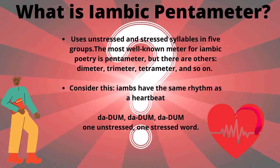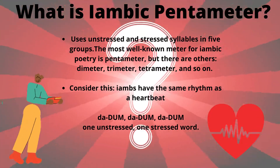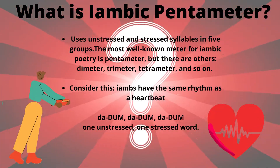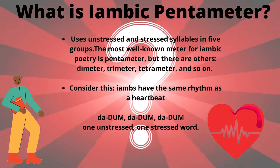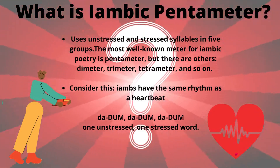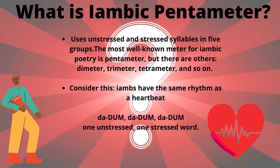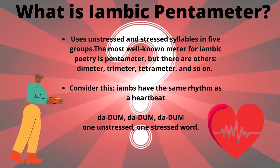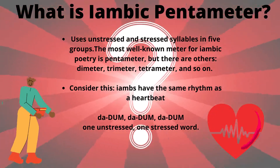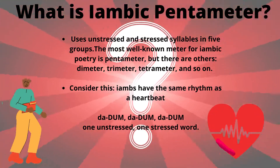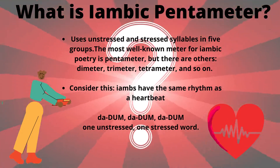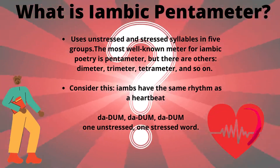What is iambic pentameter? Iambic pentameter is a meter form that uses unstressed and stressed syllables in five groups. It is most typically used in poetry. The most well-known meter for iambic poetry is pentameter, but there are others: dimeter, trimeter, tetrameter, and so on.